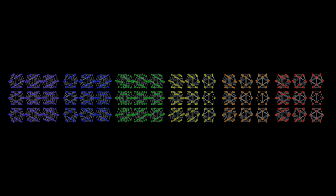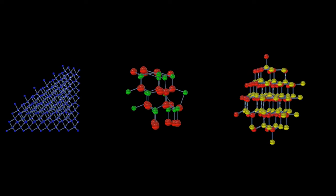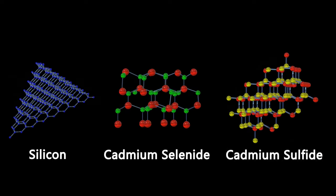Quantum dots are small semiconducting nanocrystals that can be made up of a variety of different elements, such as silicon, cadmium selenide, or cadmium sulfide.